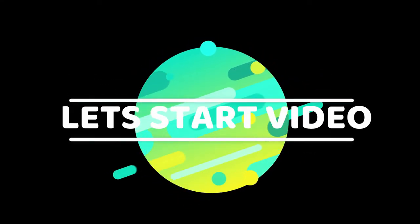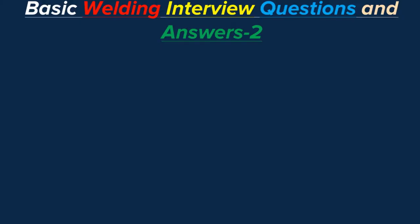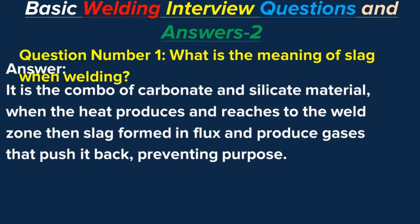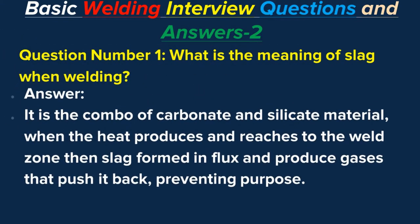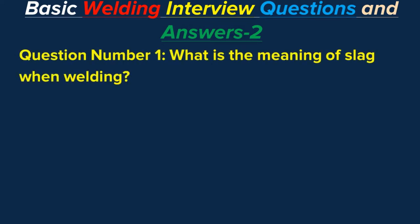Question number one: What is the meaning of slag in welding? Answer: It is a combination of carbonate and silicate material. When heat is produced and reaches the weld zone, slag is formed in flux and produces gases that push it back, serving a preventing purpose.